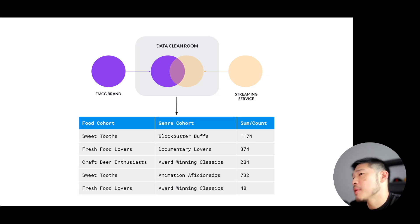And then the matching uses the encrypted ID as the join key, with the output being a new table, which you see on the slide right here, that contains the number of customers that belong to different food and genre cohort combinations.